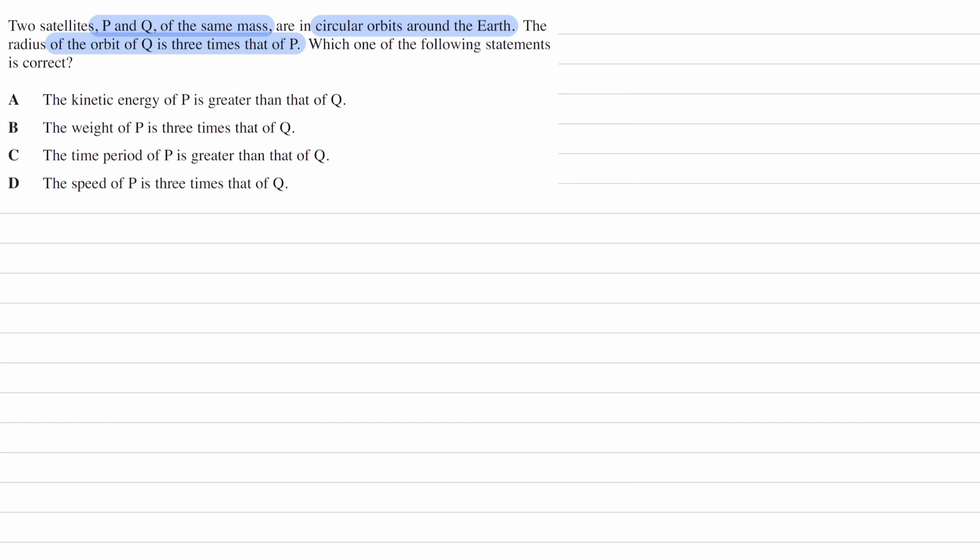Alright, so let's write some of this information down. They both have the same mass, so the mass of P is equal to the mass of Q, and let's just say that those two masses are equal to M. They have circular orbits, so we can use the centripetal force equations. And the radius of the orbit of Q, RQ, is three times the radius of P.